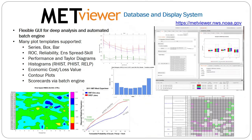METViewer was developed shortly after the first couple of releases of MET. It was designed to replicate capability at NOAA EMC to have a fairly flexible user interface for deep analysis, but also having an automated batch engine for generating plots systematically. There are many different plot templates available, everything from series analysis to box and bar, probabilistic plots like ROC and reliability, ensemble spread skill, performance and Taylor diagrams, rank histograms, as well as contour plots and scorecards via the batch engine, which is used fairly heavily at EMC.